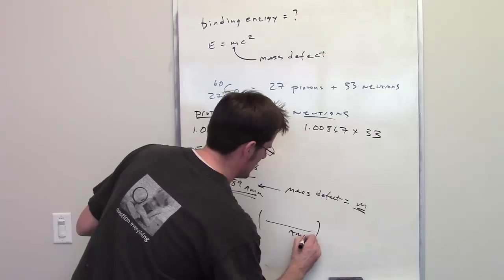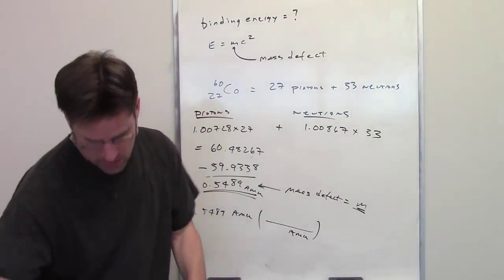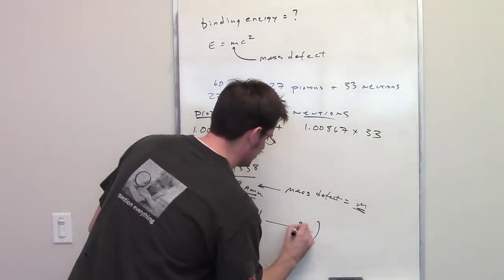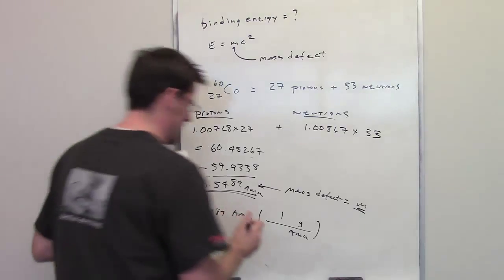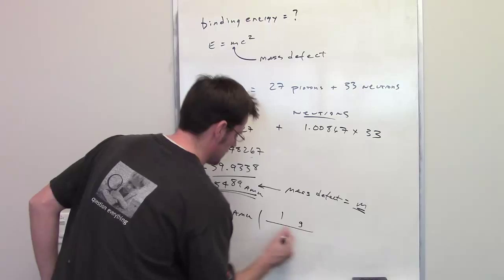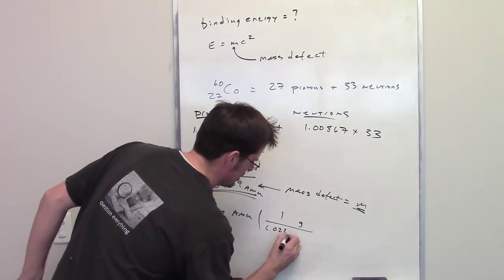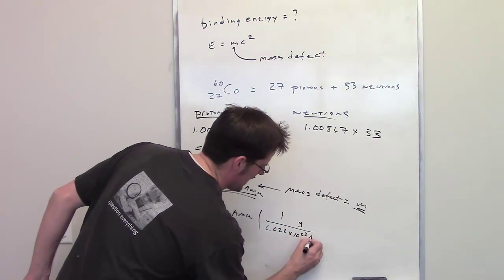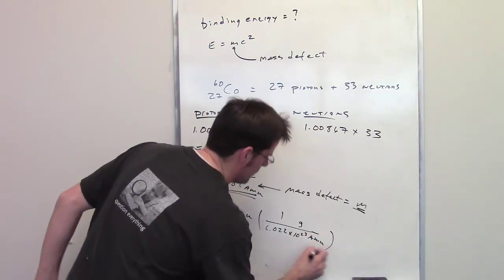So I'll go ahead and write down 0.5489 amu, and then I'm going to do some dimensional analysis. I'm going to write amus here in the denominator, and I'll write down grams in the numerator. One gram happens to be Avogadro's number of amus, and that's a big long number, so I'll give myself some space here. 6.022 times 10 to the 23rd amus are found in one gram.